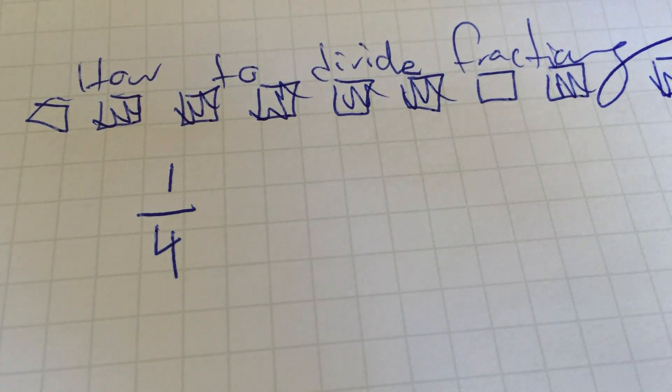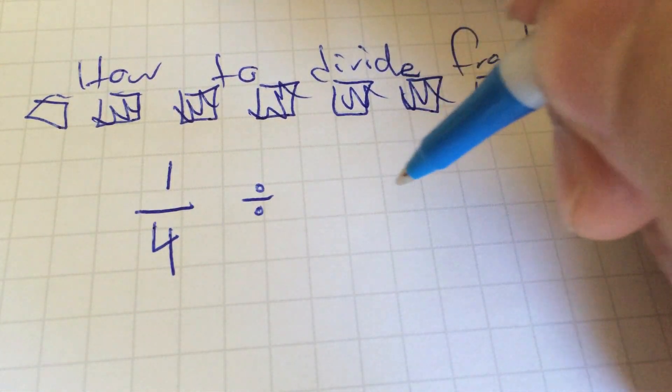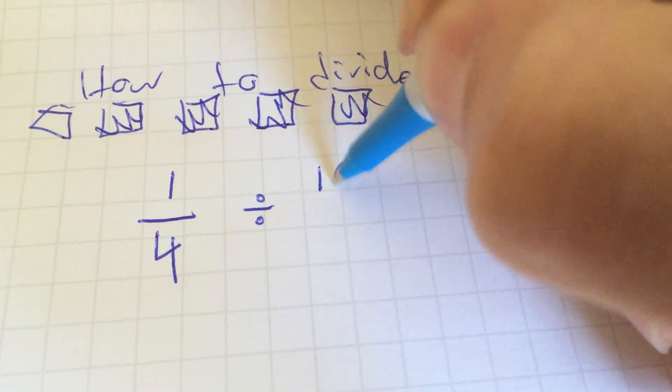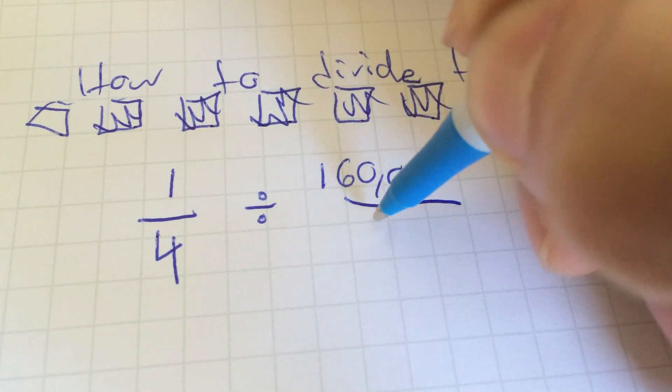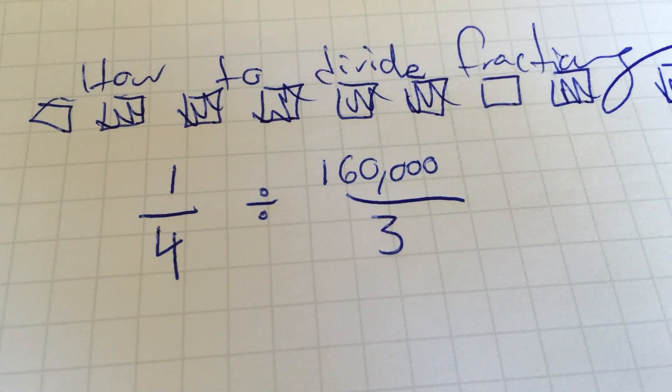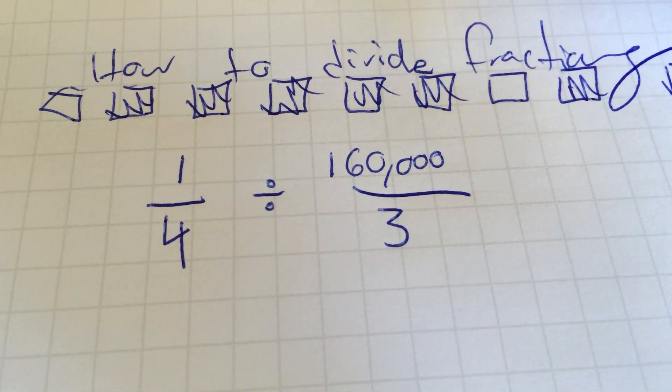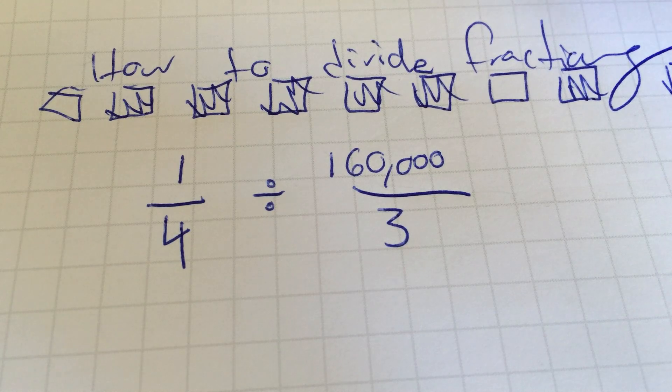This is how you divide fractions. Let's take a fraction, one-fourth, and let's divide one-fourth by, I don't know, 160,000 over three. That's a very big number. Don't be scared of big numbers. It's like a David and Goliath thing. If you believe in the Bible, now's a good time to start praying to Jesus, because that is a huge number. So one-quarter divided by 160,000 over three.